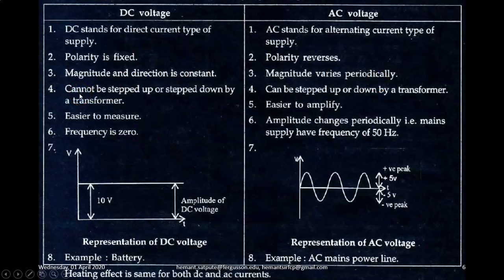For DC, it cannot be stepped up or stepped down by using a transformer. While AC can be stepped up or stepped down by using a transformer. DC voltage is easier to measure. AC voltage is easier to amplify.